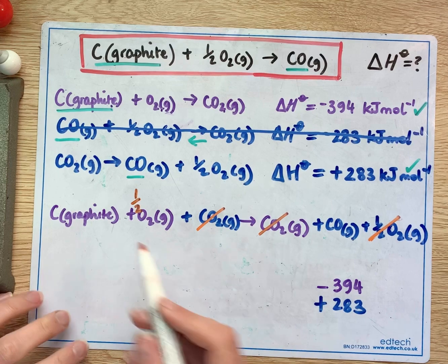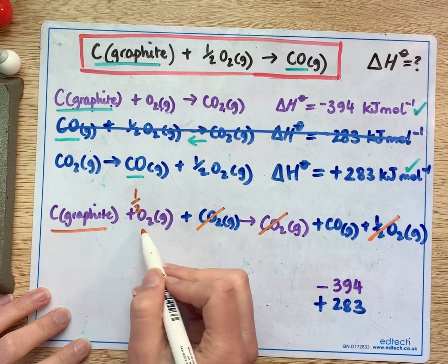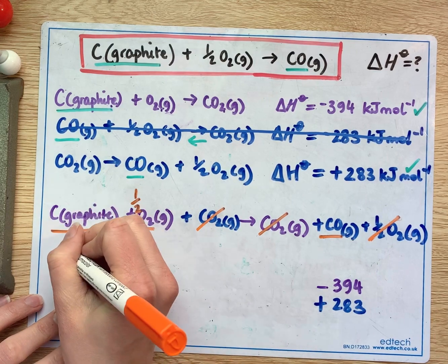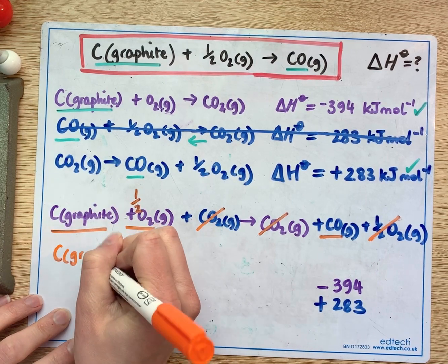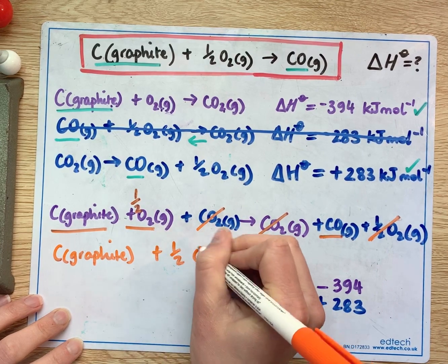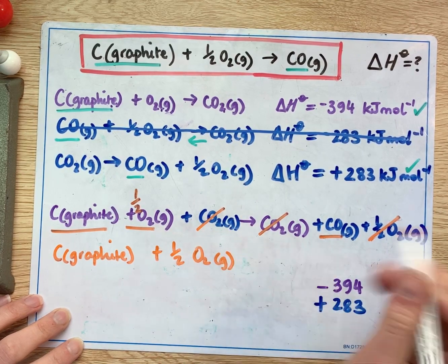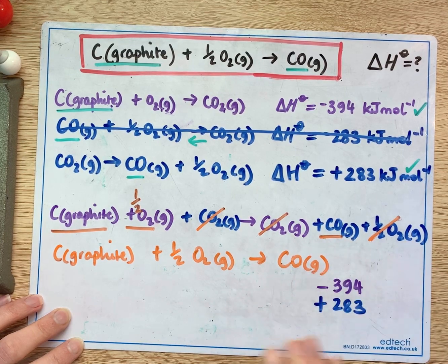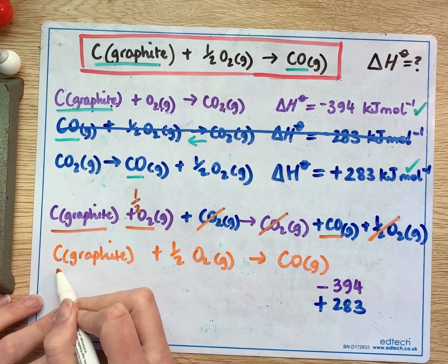So if I rewrite this now I should have these three things left: carbon graphite and half a mole of oxygen to give a mole of carbon monoxide and that is the same as my original equation that I'm looking for.